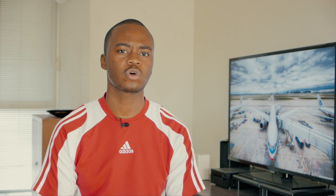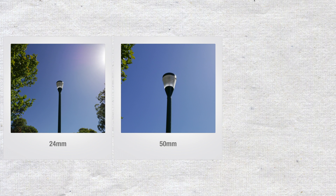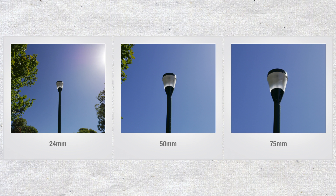To demonstrate, here's a photo shot at a focal length of 24 millimeters — you can see a pretty wide angle of view and minimal magnification. In the next shot our angle of view is reduced and magnification is increased, captured at 50 millimeters. Finally, in the third shot our angle of view is further reduced and magnification again increased, captured at 75 millimeters.